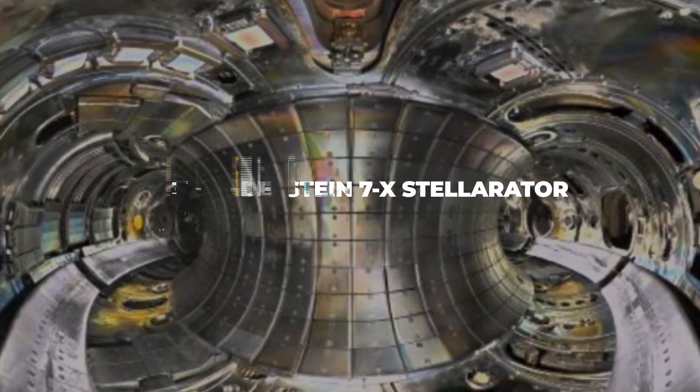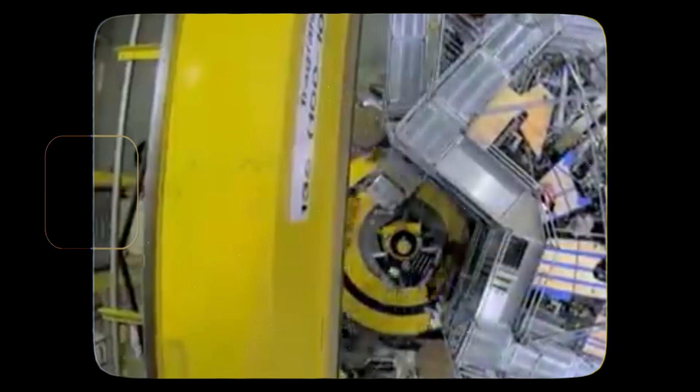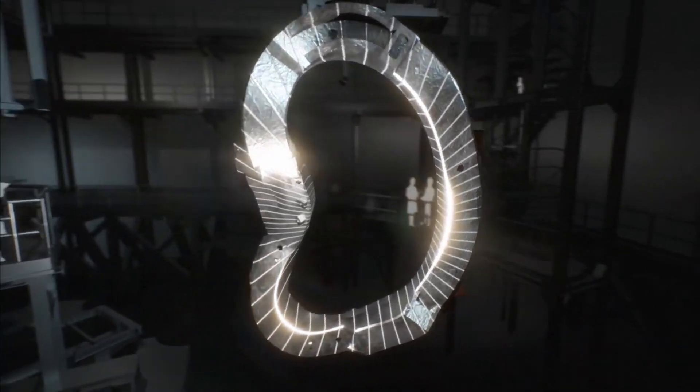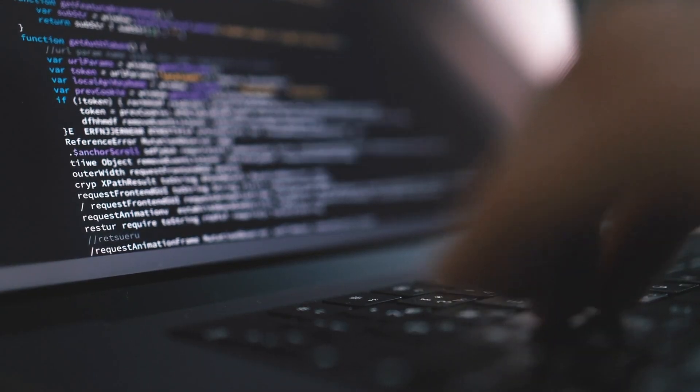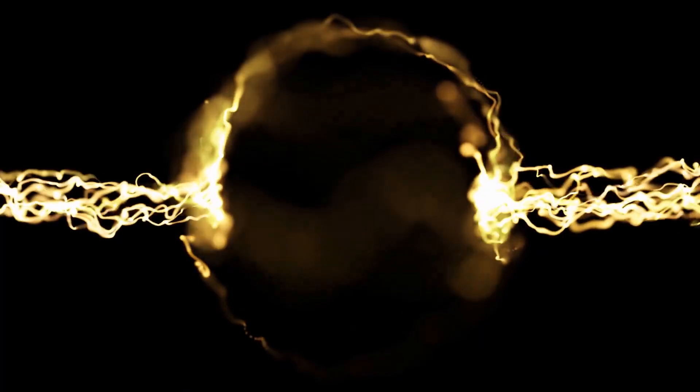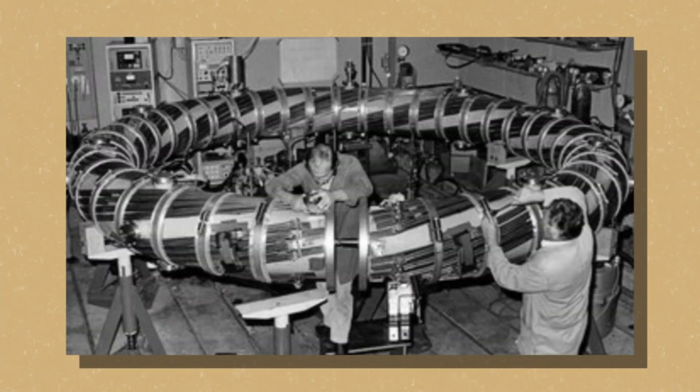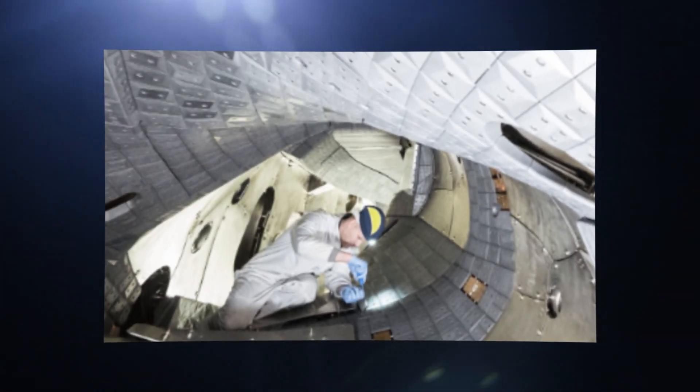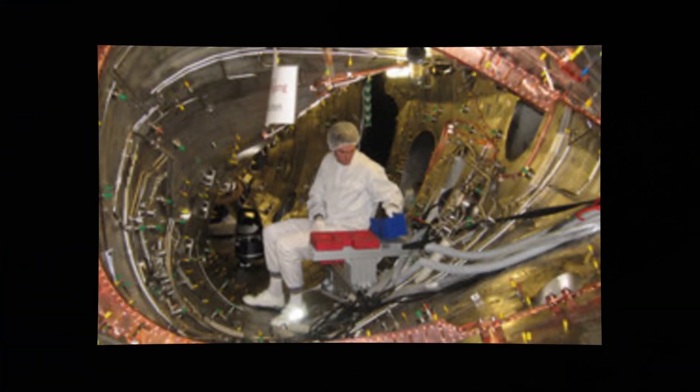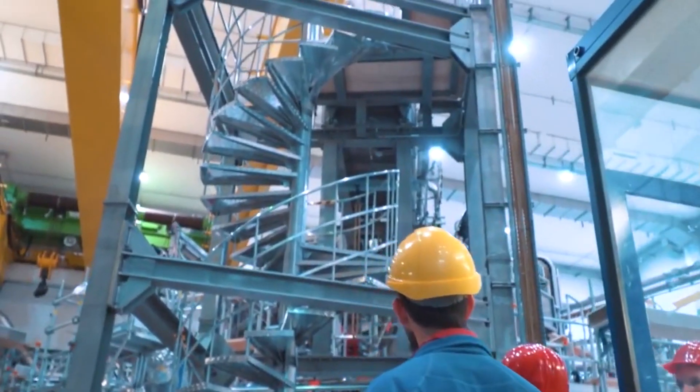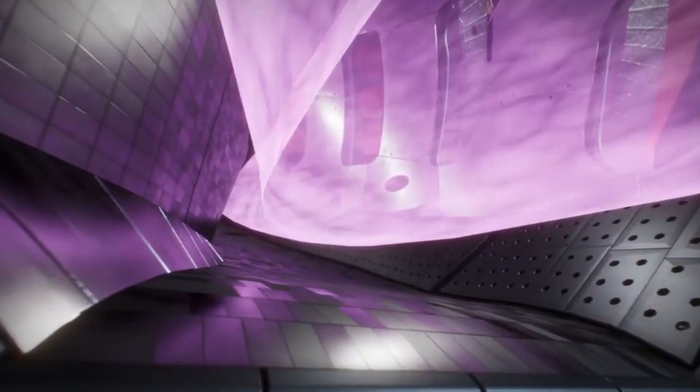Building something as impressive as the Wendelstein 7X took a really long time, a whopping 19 years. Smart people worked hard on its unique design. Even though it doesn't make electricity on its own, this powerful thing helps us learn about important stuff for future fusion power plants. After two successful phases, it took a little break for upgrades and came back in 2022. Slowly but surely, it cranked up its power to try and keep a special plasma thing going for 30 whole minutes. This is a big deal because it shows how a future fusion power plant can keep running nonstop.